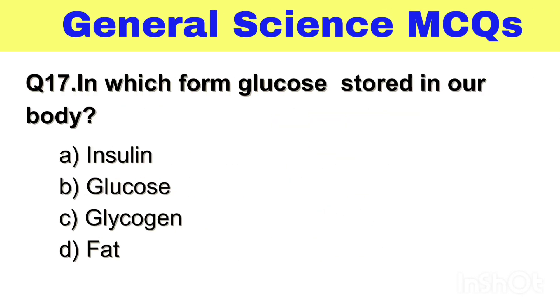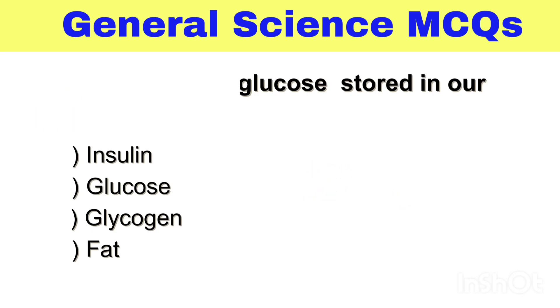Question No. 17. In which form is glucose stored in our body? Option A. Insulin, B. Glucose, C. Glycogen, D. Fat. The right answer, Option C. Glycogen.